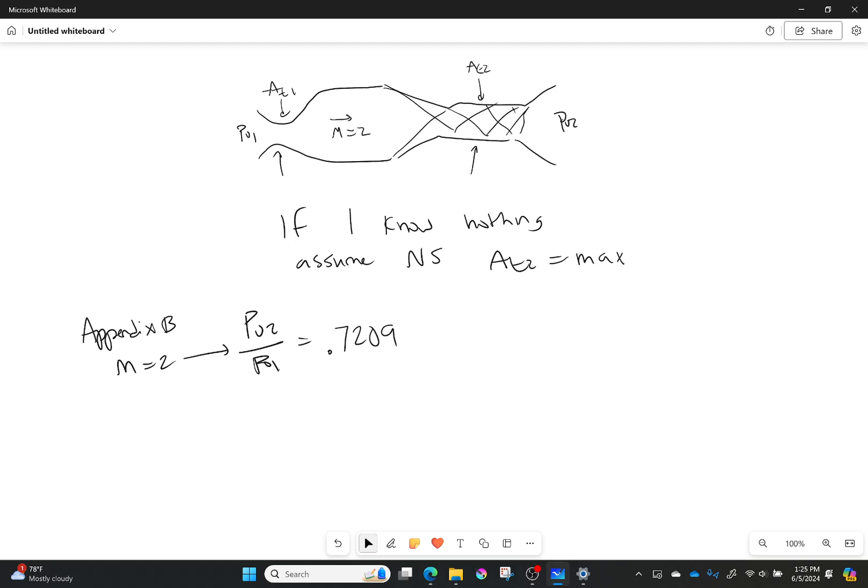So I get that in this worst case scenario, my pressure ratio would be 0.7209. And so from that, I can figure out what the ratio of my throats would be. So AT2 over AT1 would be equal to P01 over P02, which would be equal to 1 over 0.7209, which is a ratio of 1.387. There you go.